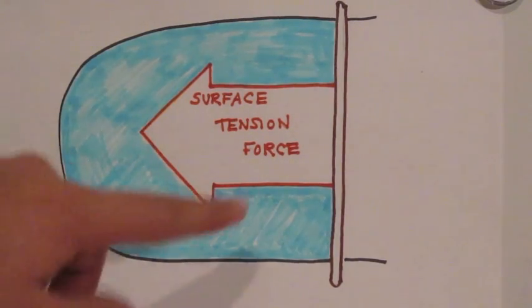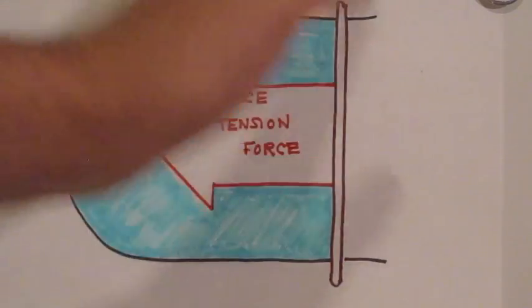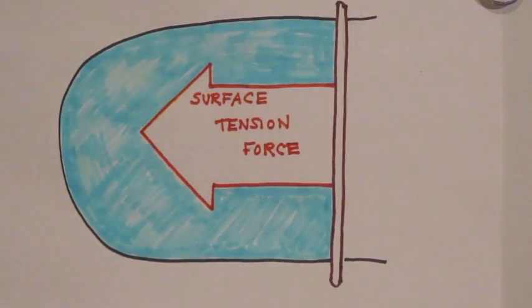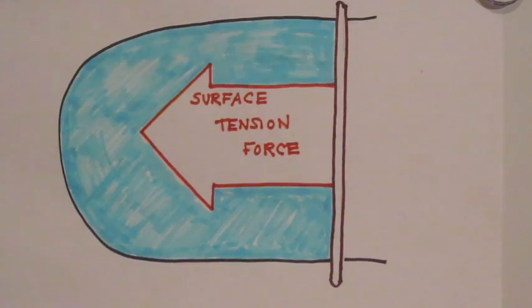Let's imagine some liquid suspended between a U-shaped wire and a movable bar. If no force is applied to the bar, the liquid will minimize its surface area by drawing the bar inward. This inward force on the bar is called the surface tension force.